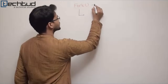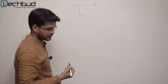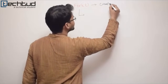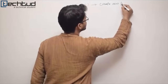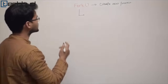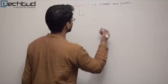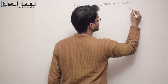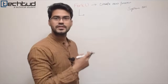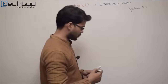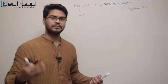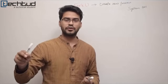Fork is a unique Unix system call which is used to create a new process. Now, I am repeatedly saying 'system call' — you should understand what a system call actually is. System calls are basically a medium or a way to request services from the kernel.